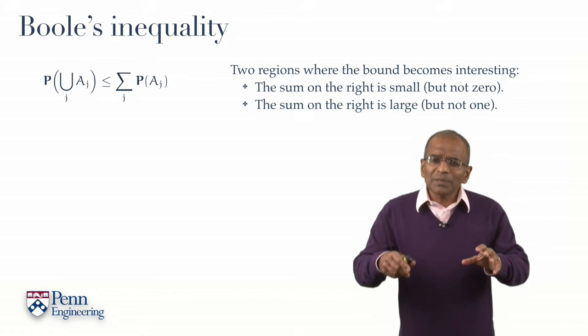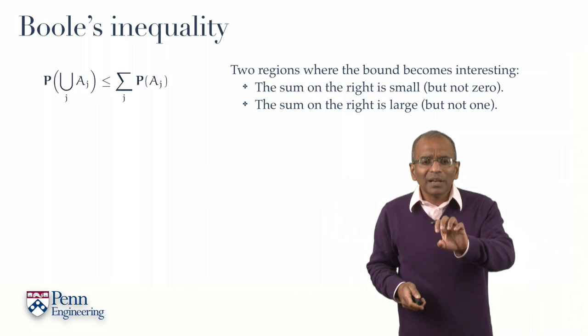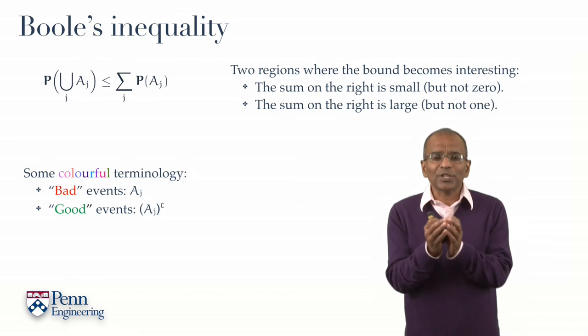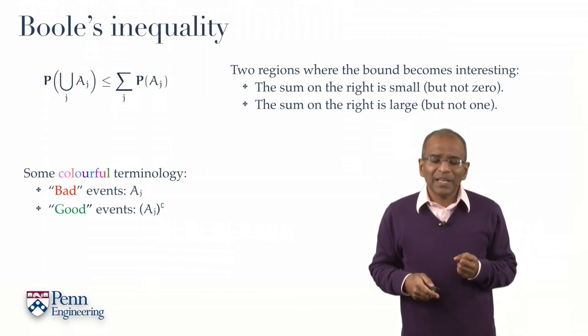Some terminology and some color will add to the picture. Here's some colorful notation and terminology. Let us think of the events A1, A2, A3, and so forth, as bad events. Something bad happens.